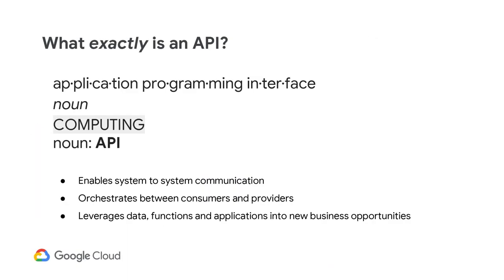I often get this question from my customers at the start of an engagement: What is an API? The formal definition of API is application programming interface. It is a way for systems to communicate with each other. It leverages and reuses data, functions, and applications, and combines them into new business opportunities. Furthermore, it connects consumers of data, systems, and applications with providers of the same.